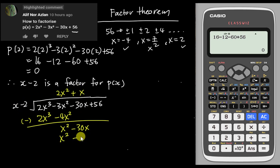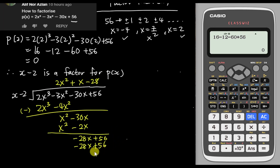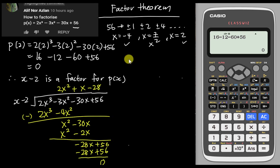x times negative 2 gives minus 2x. With the invisible minus, x² minus x² equals zero, and negative 30x minus negative 2x gives negative 28x. Bring down plus 56. To eliminate negative 28x, multiply by minus 28: negative 28 times x gives negative 28x, and negative 28 times negative 2 gives plus 56. The remainder is zero — it must always equal zero. If it's not zero, something is wrong with your long division.